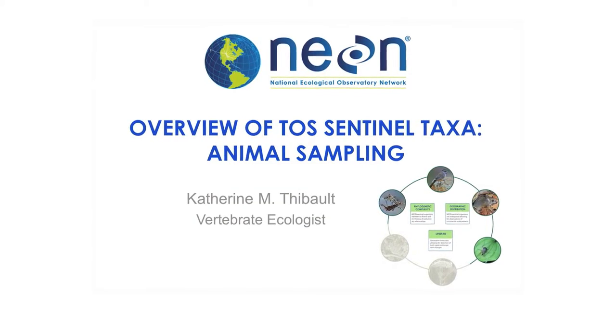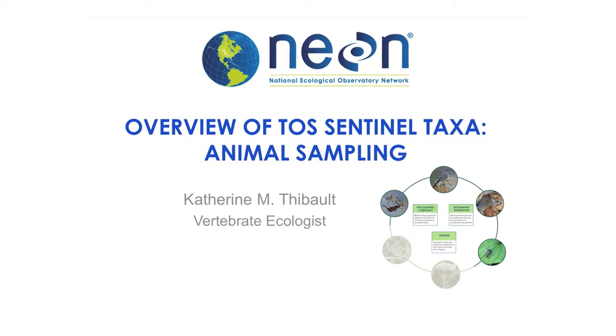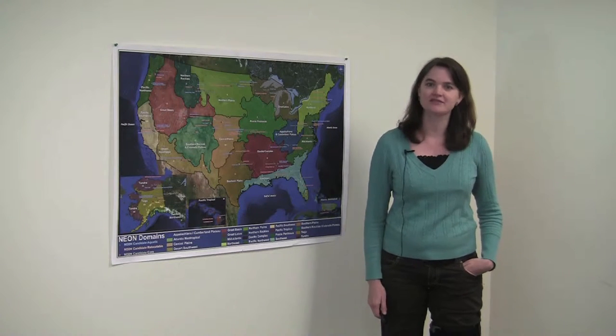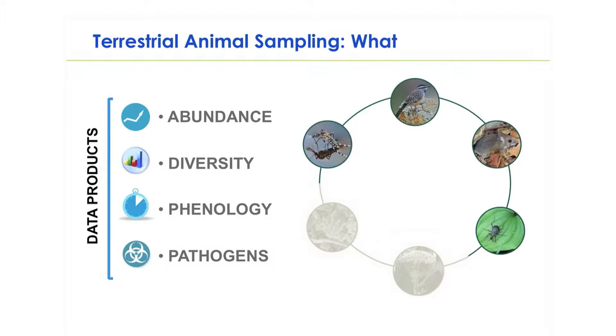Hi, I'm Kate Thiebaud. I'm the vertebrate ecologist on FSU. I'm going to talk to you today about the animal sampling component of the terrestrial observation system. I'm giving this talk on behalf of my animal ecology colleagues, Uri Springer, the disease ecologist, and David Hookman, the insect ecologist. This component includes data collection on the abundance, diversity, phenology, and pathogens of our sentinel animal taxa.